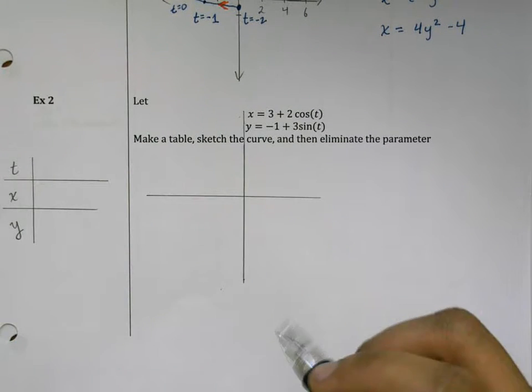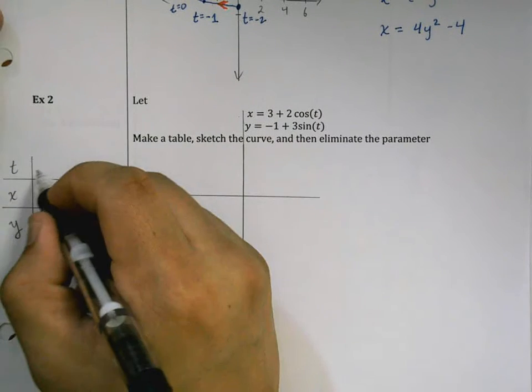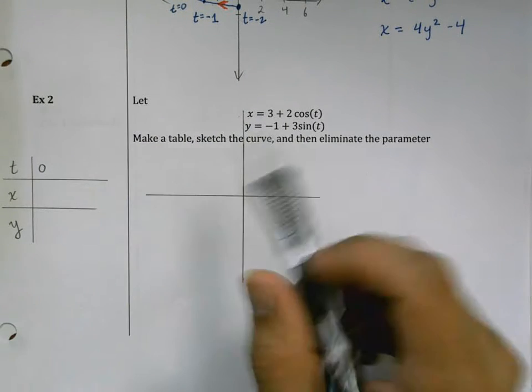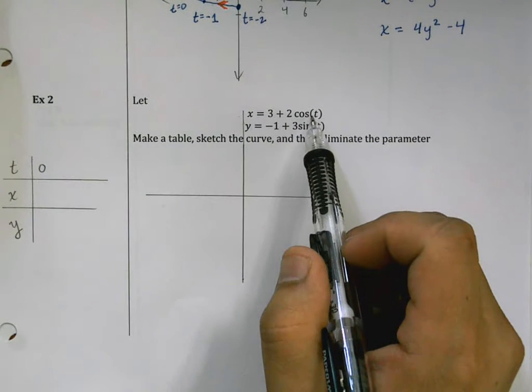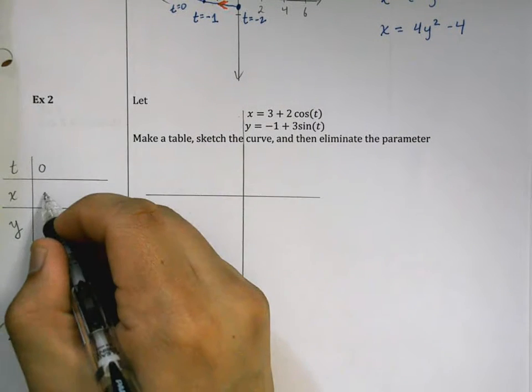It doesn't really give instructions for what to put in for t, so I'm just going to start out at t equals zero. When t equals zero, cosine of zero is one times two is two plus three is five.